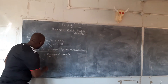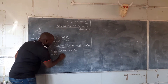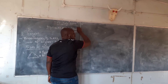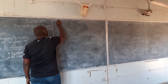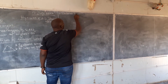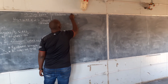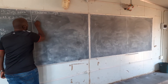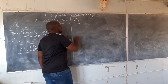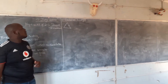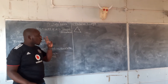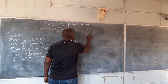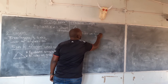The second triangle is an isosceles triangle. This means that out of the three sides, only two sides are equal. There are three sides but only two sides are equal.